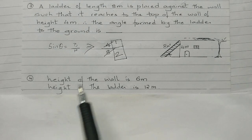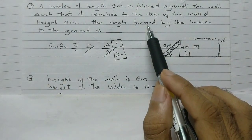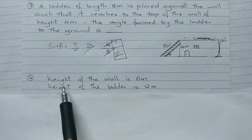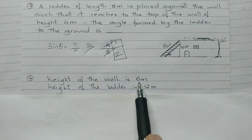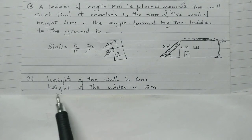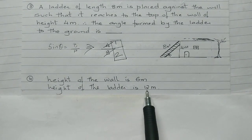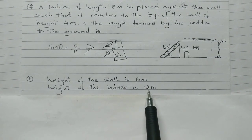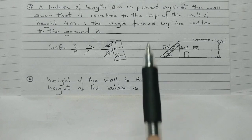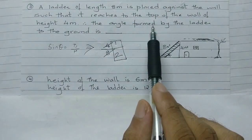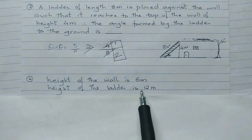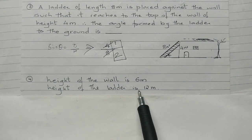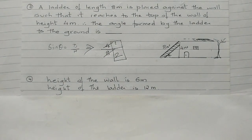Problem number 4 is the same question with different values — the height of the wall is 6 meters and the length of the ladder is 12 meters. The question is exactly the same; just the values have changed. What is the angle? You can give me the answer.